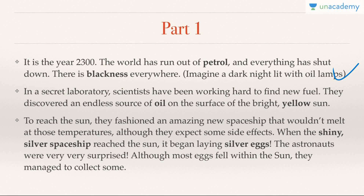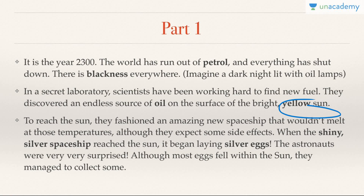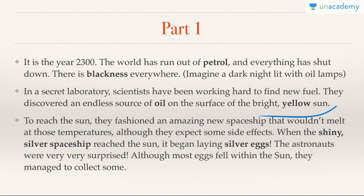In a secret laboratory, scientists have been working hard to find new fuel. They discovered an endless source of oil on the surface of the bright yellow sun. It is very easy to relate yellow with the sun, and it is related to oil seeds — so oil seeds are linked to the bright yellow sun.